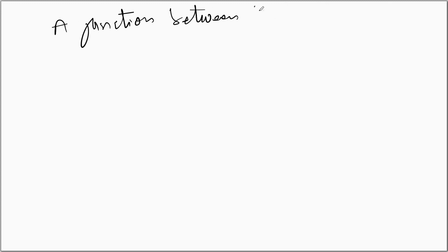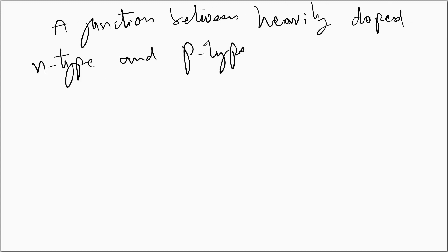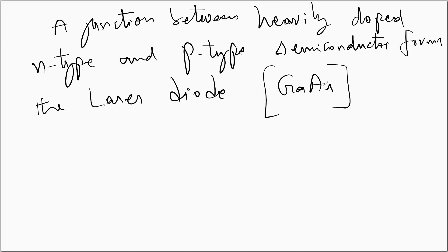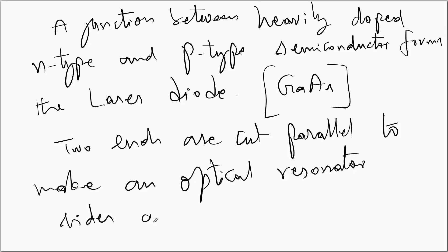A junction between heavily doped N-type and P-type semiconductors forms the laser diode. In the case of a homo junction diode, gallium arsenide is used — heavily doped with N-type on one side and P-type on the other. The two end faces are cut parallel to establish the optical resonator, while the sides are roughened so that optical oscillations occur only along the length of the diode.